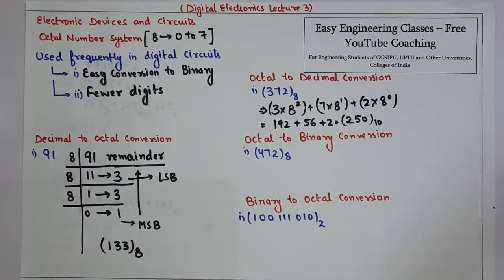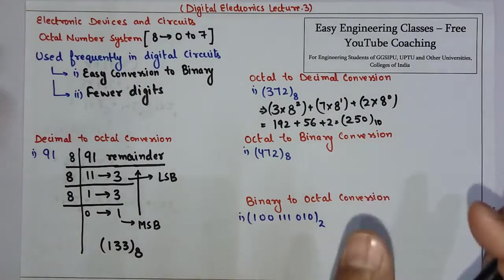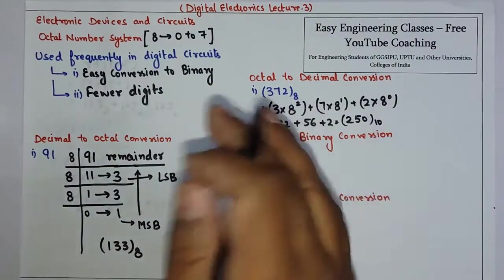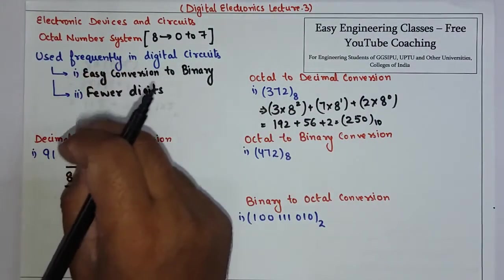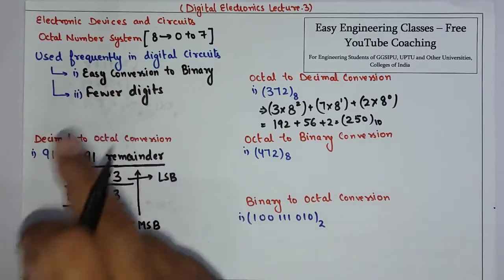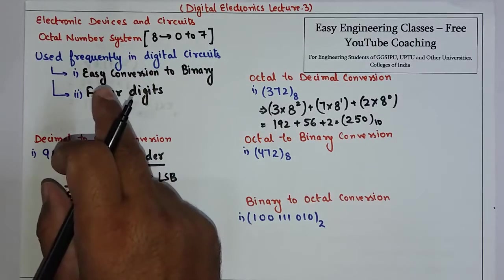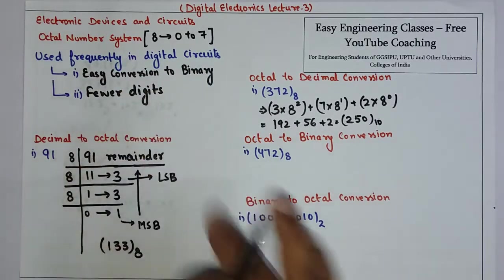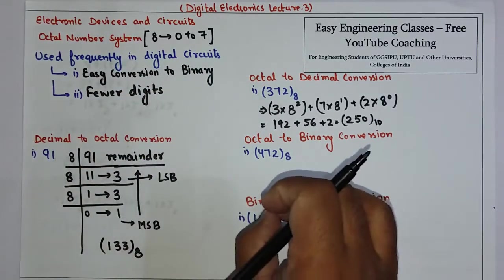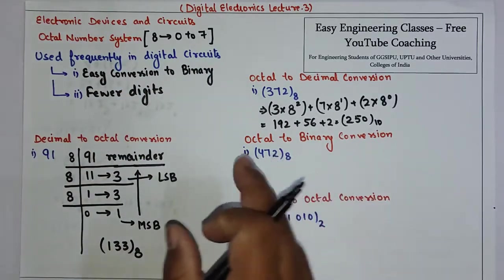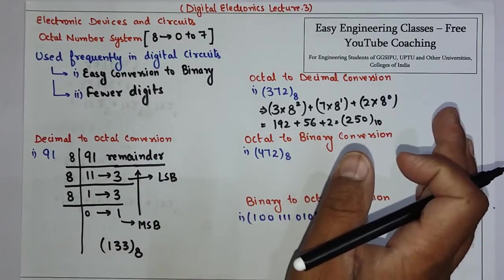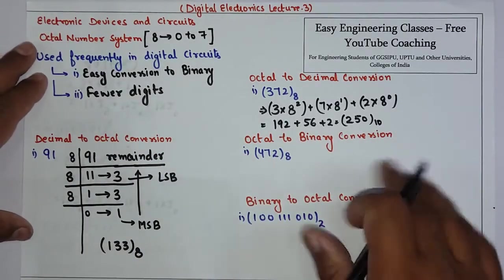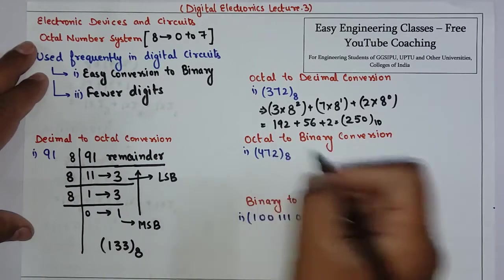Next is octal to binary conversion. This is important because when I said that the octal system is frequently used in digital circuits, the first reason was easy conversion to binary. Now let's see how easy it is to convert octal to binary.